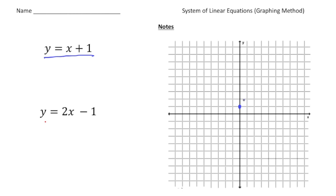From the y-intercept, we go up 1 over 1, up 1 over 1, and then we also go down 1 left 1, down 1 left 1. We want to have at least eight or nine different points here.